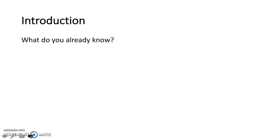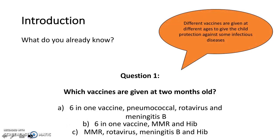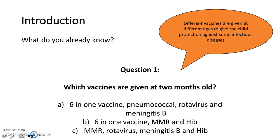There are a couple of questions to begin. Question 1 is: which vaccines are given at 2 months old? The answer to question 1 is option A. The 6-in-1, pneumococcal, rotavirus and meningitis B vaccines are all given at 2 months old as the baby's first set of injections.